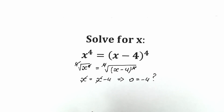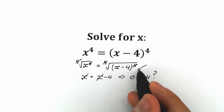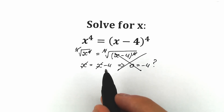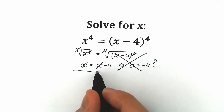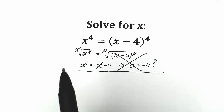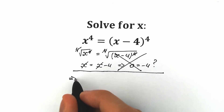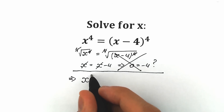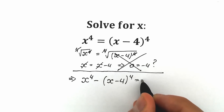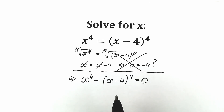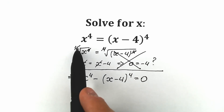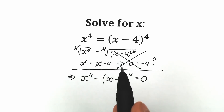Right now we are going to solve this challenge absolutely correctly, step by step. Forget about that bad, random solution. First of all, let's separate the solutions and bring x minus 4 to the fourth power from the right side to the left side. So we have x to the fourth power minus x minus 4 to the fourth power, equal to zero. This is the correct first step.